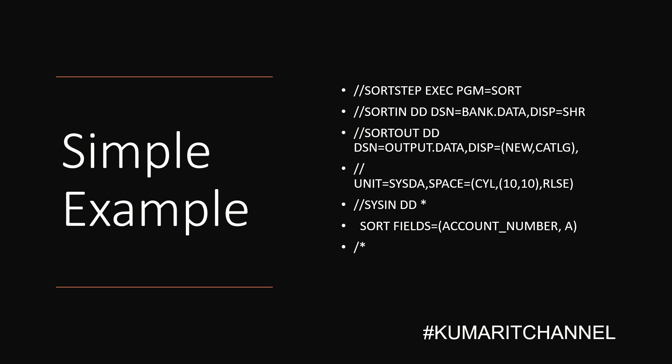The sort card acts as instructions that tell the mainframe how to sort the data. For example, a bank may have a data set containing customer account information including their account number, name, balance, and other data. If the bank wants to sort this data in ascending order based on account number, they would definitely use this sort card to specify that the data should be sorted by the account number field in ascending order. I'm sure this sort card is used in banking projects.